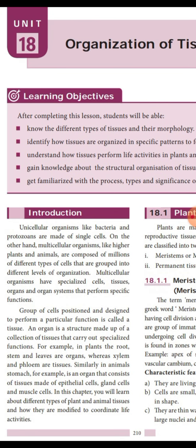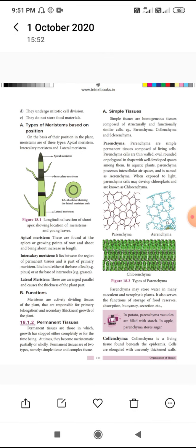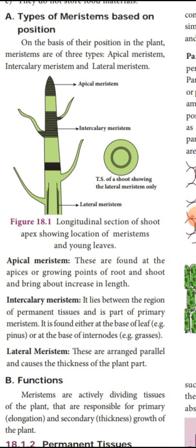Meristematic cells do not store any food material. What are the types of meristem and how are they classified? Generally, they are classified based on position into three types: apical meristem, intercalary meristem, and lateral meristem.